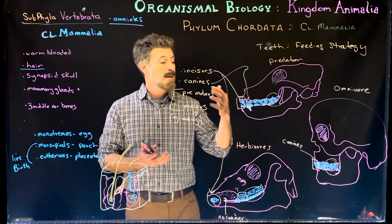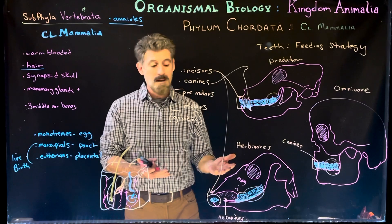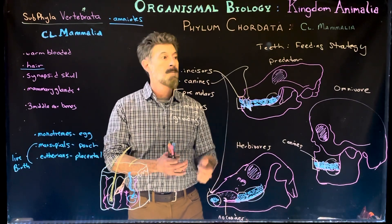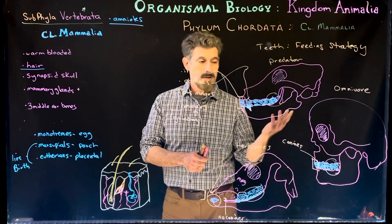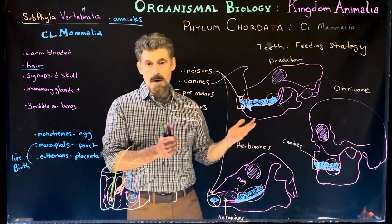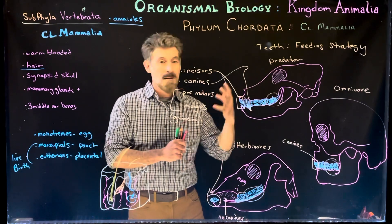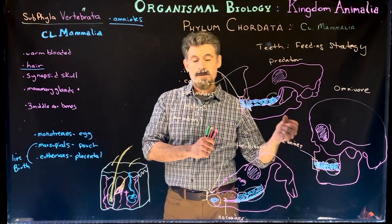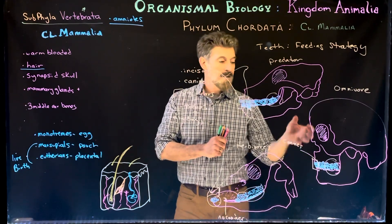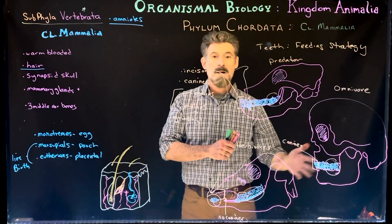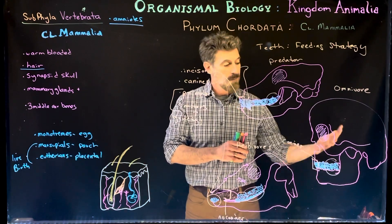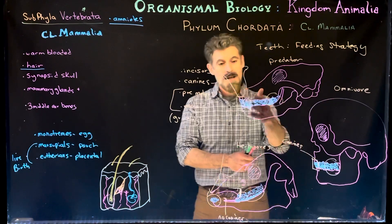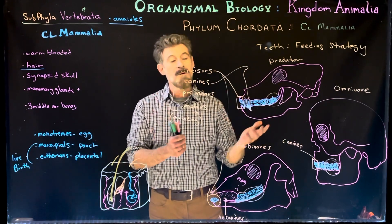In terms of feeding strategy and behavior, herbivores feed almost constantly because they're not getting much nutrients from plant material. Predators, by contrast, are often sleeping because they get a lot of nutrition from meat and then rest. Omnivores have a bit of both — eating more fruits, vegetables, nuts, and mixing in some meat. They don't have really well-developed canines, not typically used for attacking or killing prey, but for consuming meat captured another way. As primates evolved greater intelligence and used tools, they could capture prey without needing to bite it down like a wolf would.